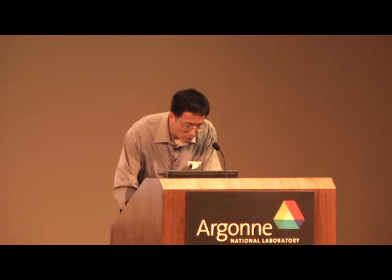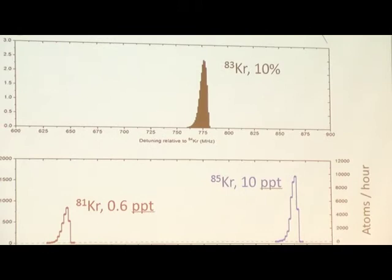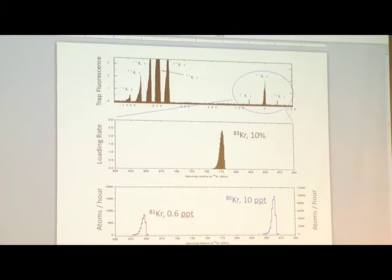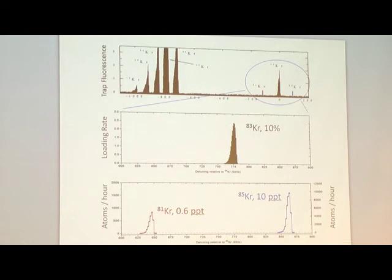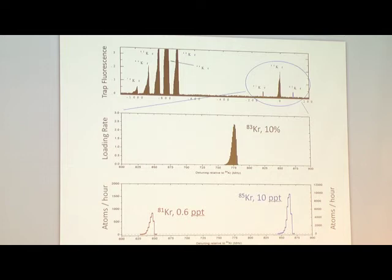Question: Do you have to worry about collision broadening of your spectral lines bringing in the tails of more abundant species? Answer: That's not a problem. Collision broadening is a concern for precise applications like atomic clocks where you want a very narrow transition. In our case, we just want to count the number of atoms, so the broadened linewidth is fine. We have no problem telling the difference between adjacent isotopes even with a little broadening.